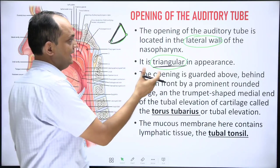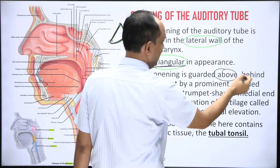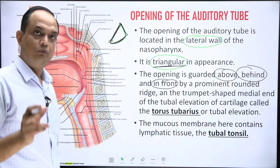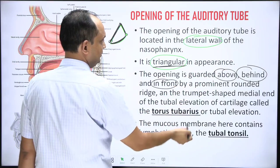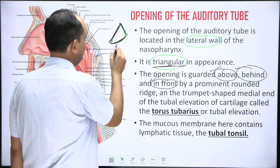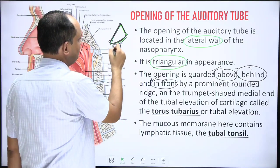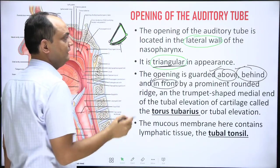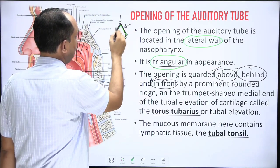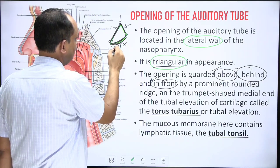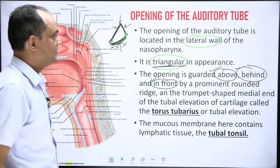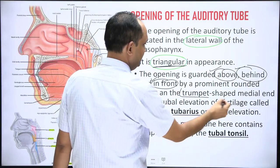The opening is guarded above, behind, and in front by prominent round ridges — but not below, because cartilage is absent in the lower part. So prominent ridges appear at the upper, posterior, and anterior aspects of the opening, but the lower part shows no such prominences. Overall it has a trumpet-shaped appearance.